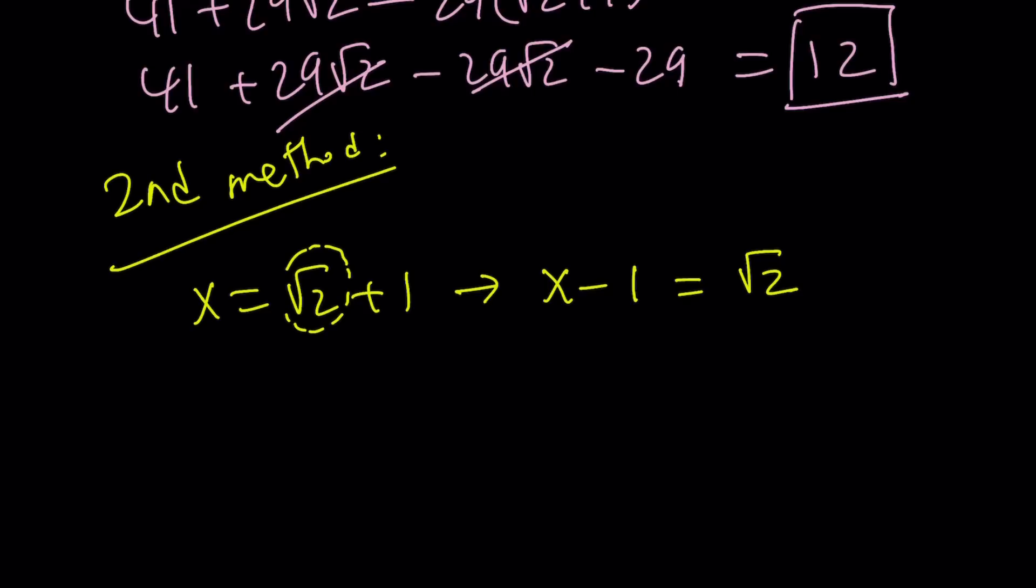We're going to get x - 1 = √2. Why am I isolating the radical? Because I want to square both sides and get rid of the radical.